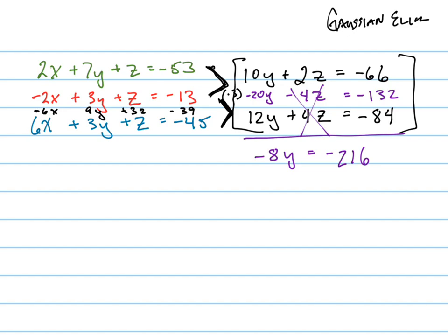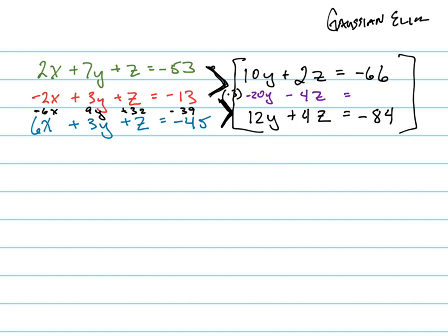I meant to say the result should give negative 8y equals 48 — I made a sign error earlier. So y equals negative 6. That's the same answer we got before with substitution. Now you plug that back into either one of the two-variable equations to solve for z.